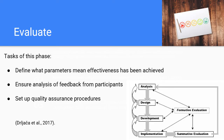Phase five is evaluate. Tasks of this phase include defining what parameters mean effectiveness has been achieved — how do we determine if our course was successful. We ensure analysis of feedback from participants, which typically comes in the form of survey data. And we set up quality assurance procedures to ensure that fine tuning and fixes are made to the instructional materials as needed.